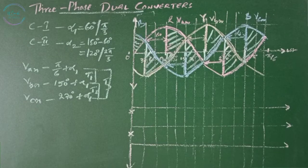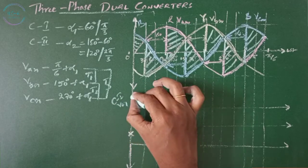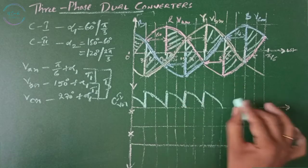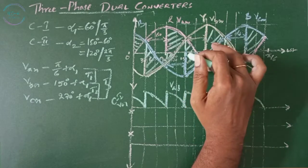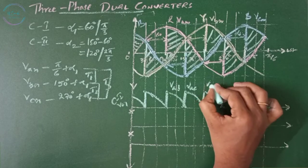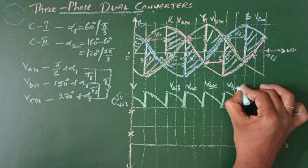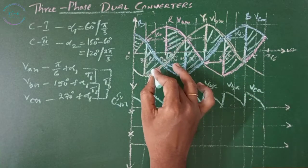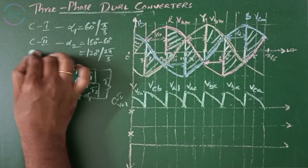Drawing the resultant waveform for converter 1 output V01: VAB, VAC (VAN and VCN), VBC (VBN and VCN), VBA (VBN and VAN), VCA (VCN and VAN), and VCB (VCN and VBN).